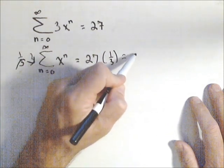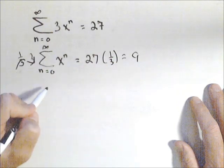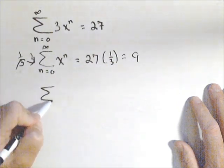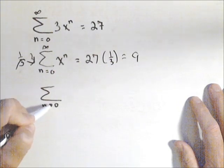So this just becomes nine. And now, over here, we have the summation of n equals zero to infinity of x to the n.